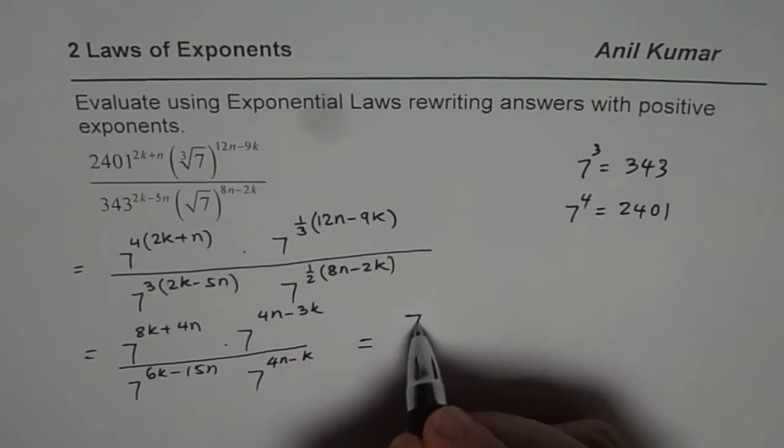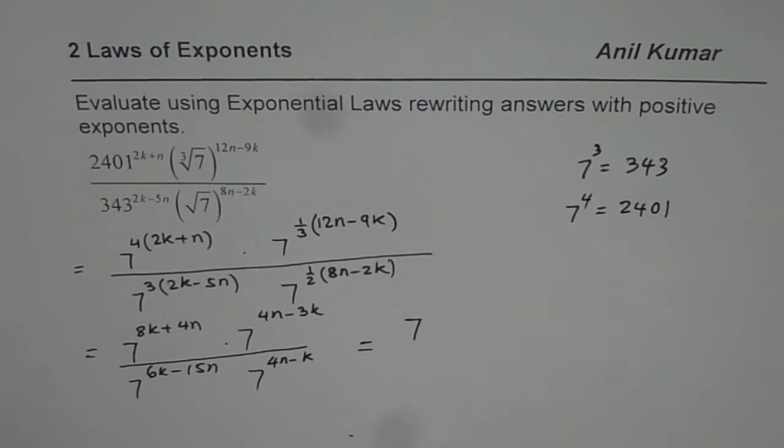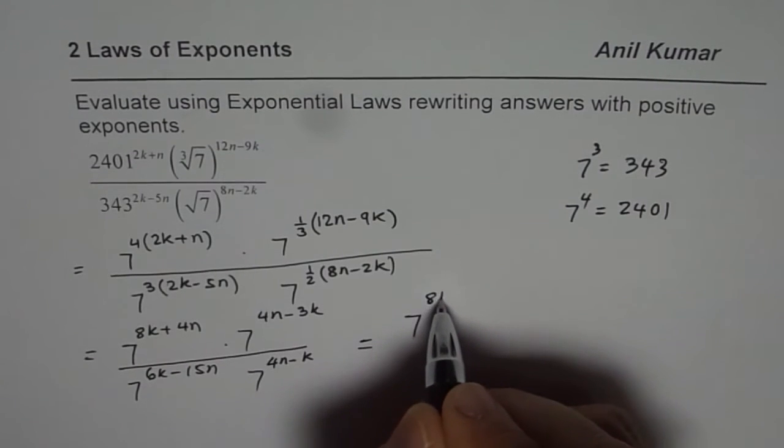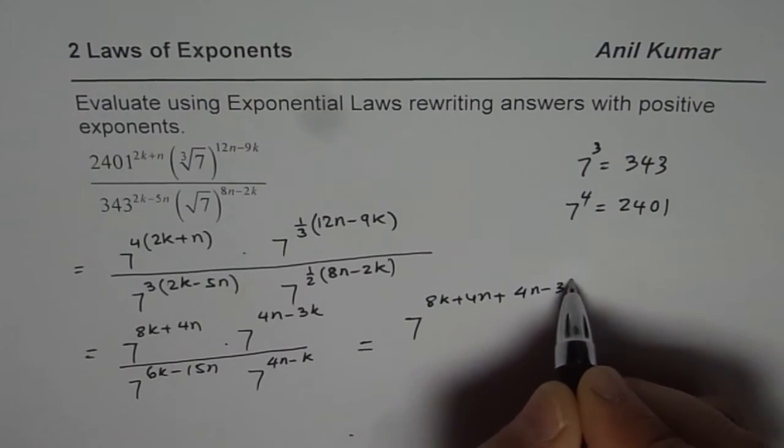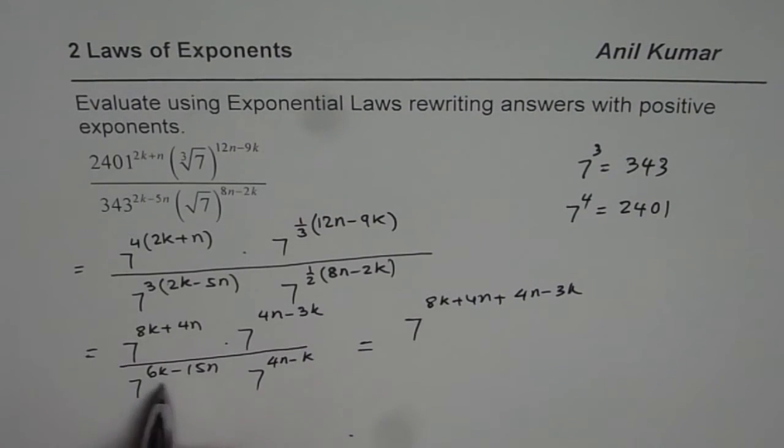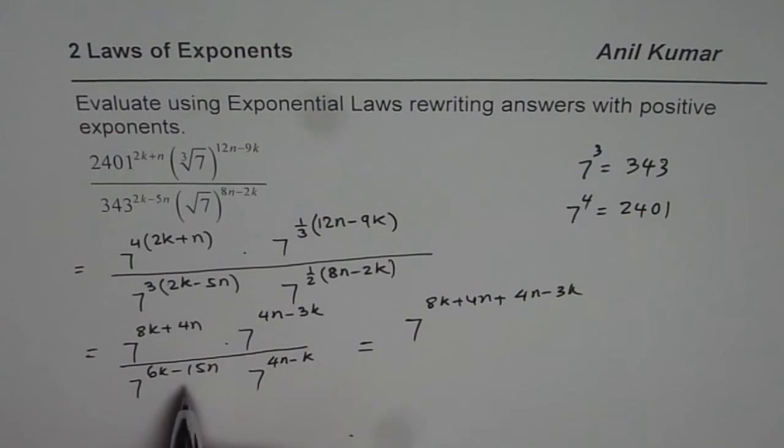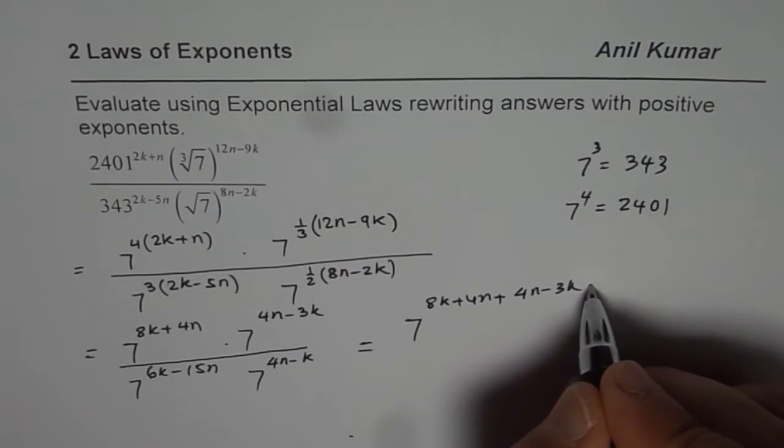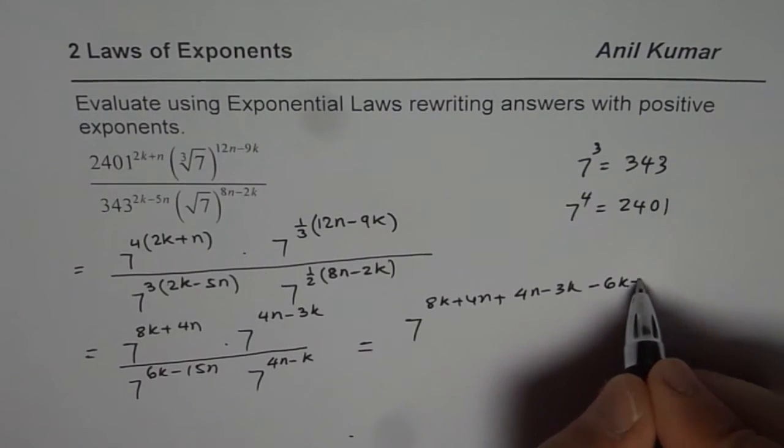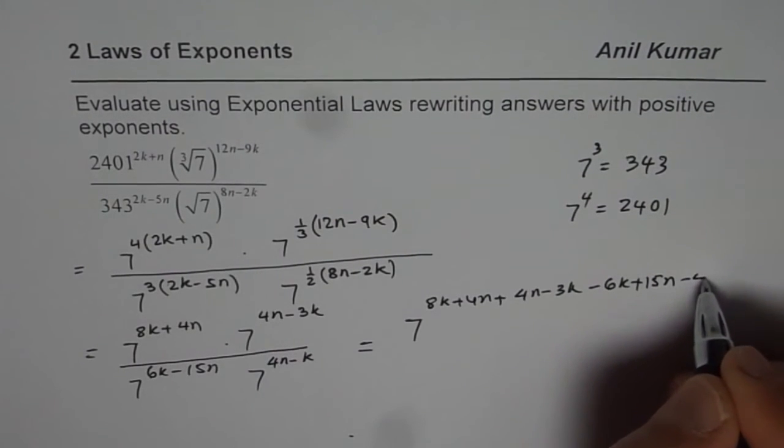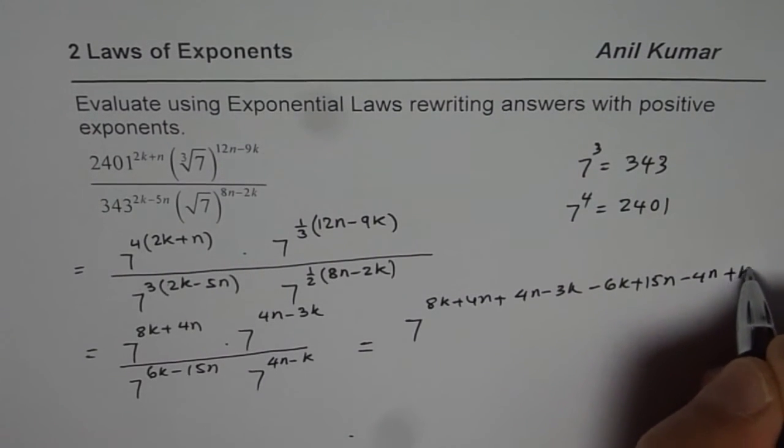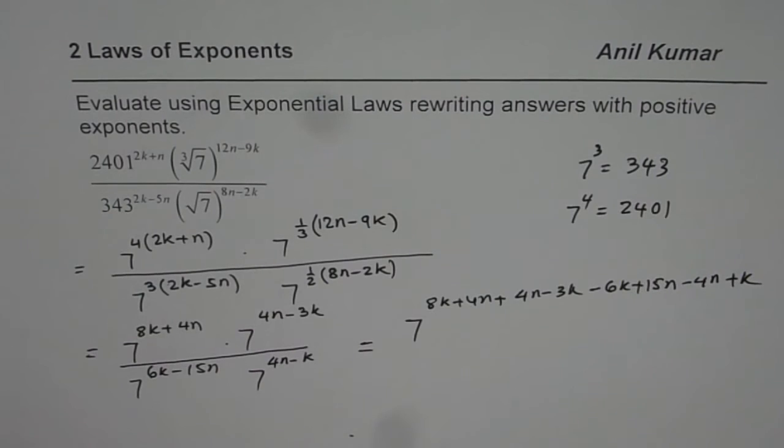Now we can actually apply our rules or laws of exponent. So when you are multiplying, they get added up. So it is 8k plus 4n plus 4n minus 3k. They all get added up. And these get subtracted, the ones in the denominator. So we will write them with negative signs. Minus 6k plus 15n and minus 4n plus k, right? You have to reverse both signs, as I did.